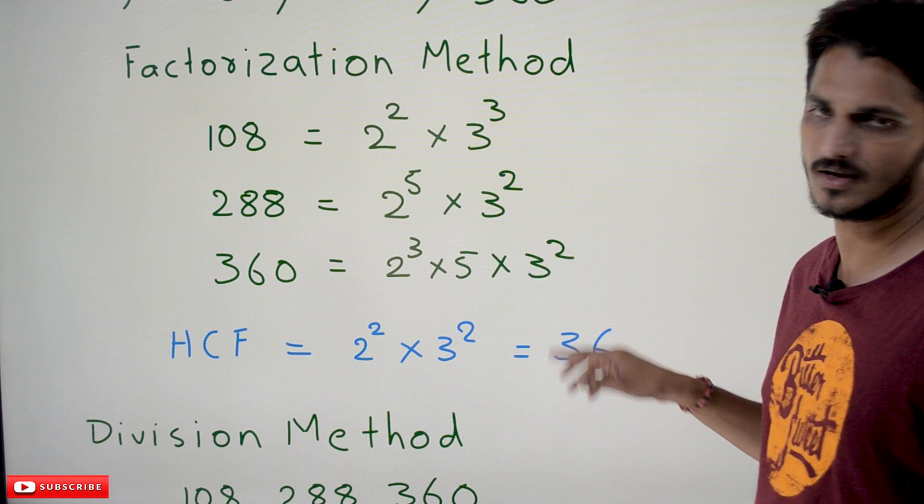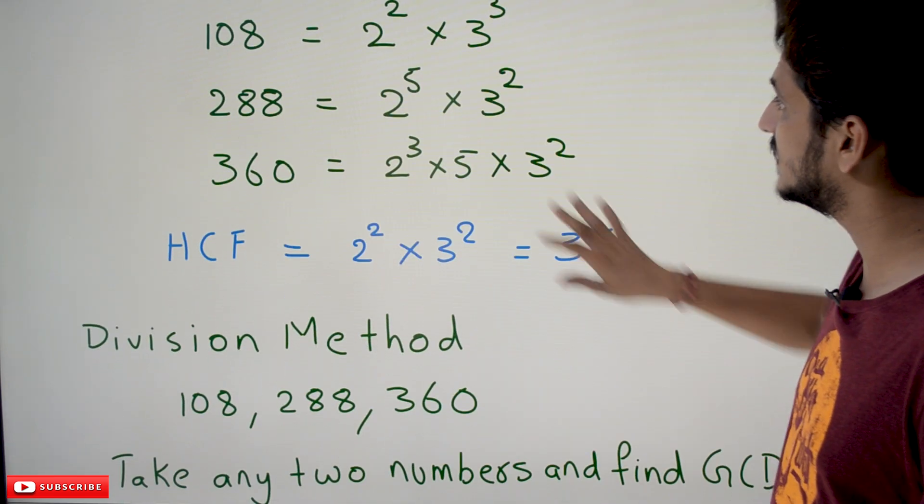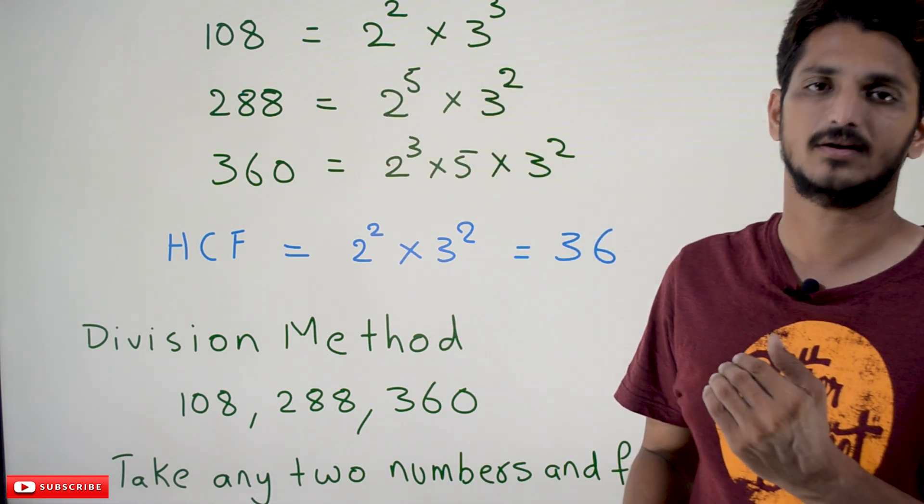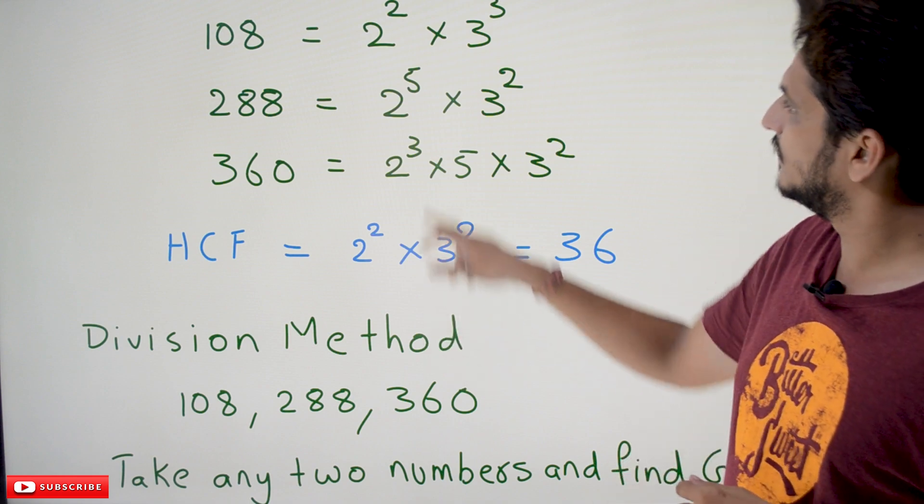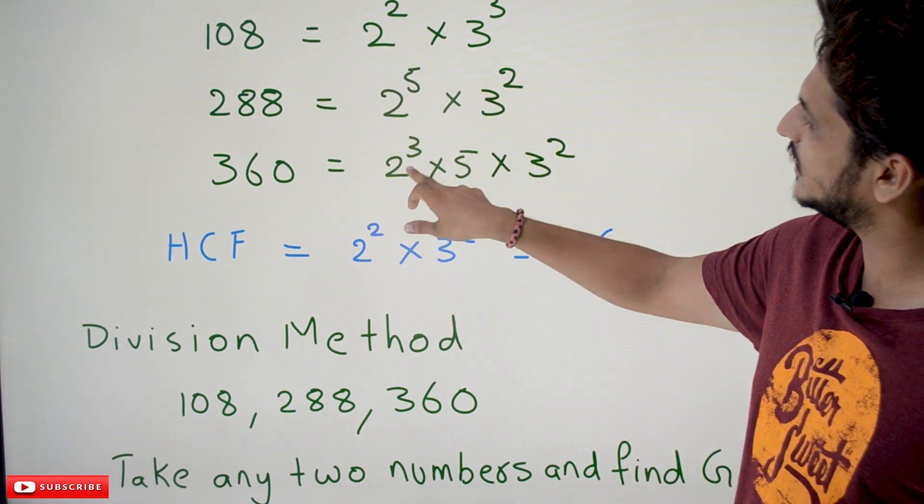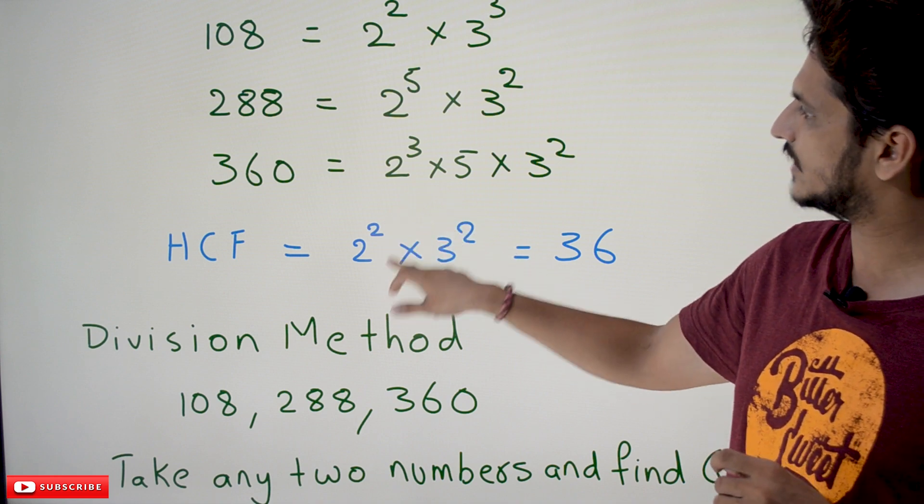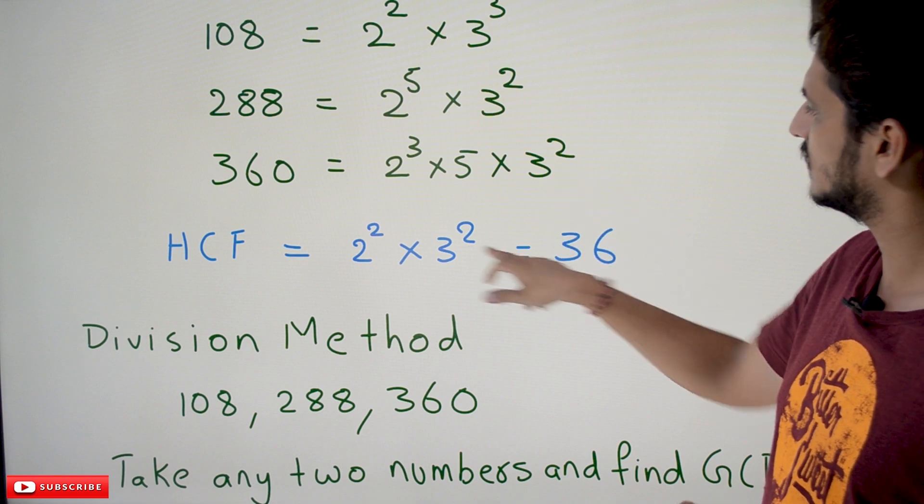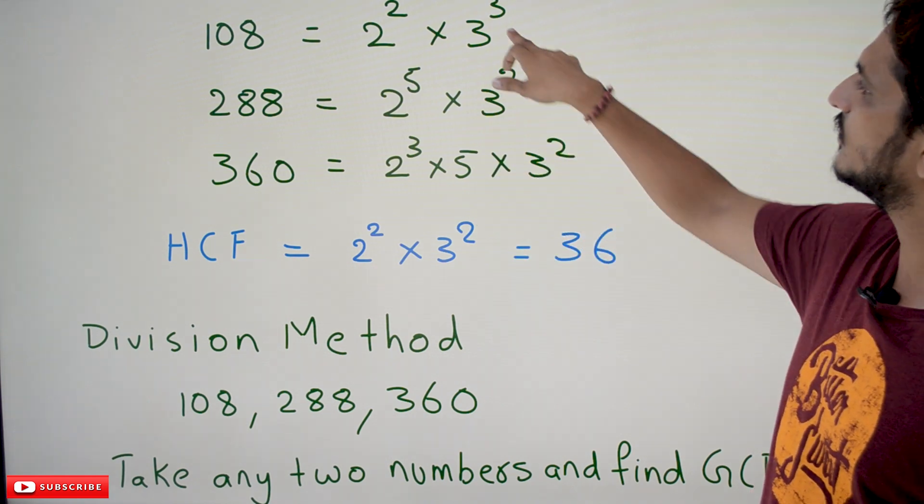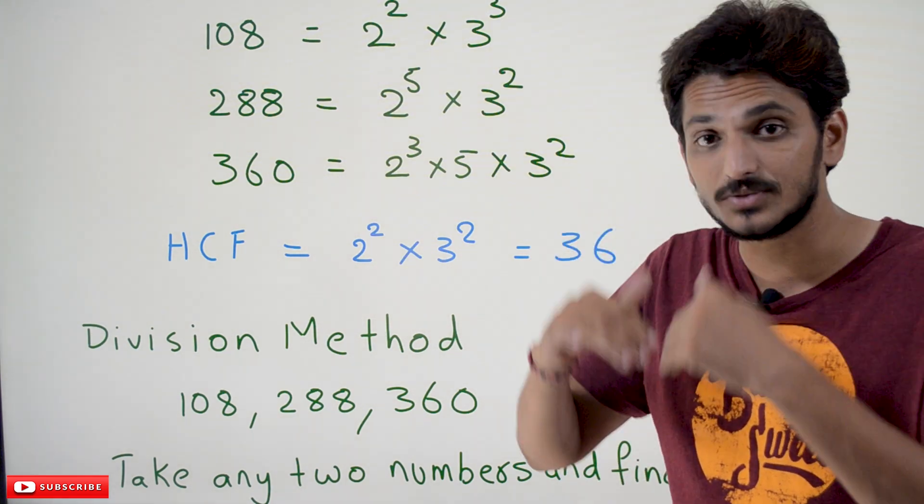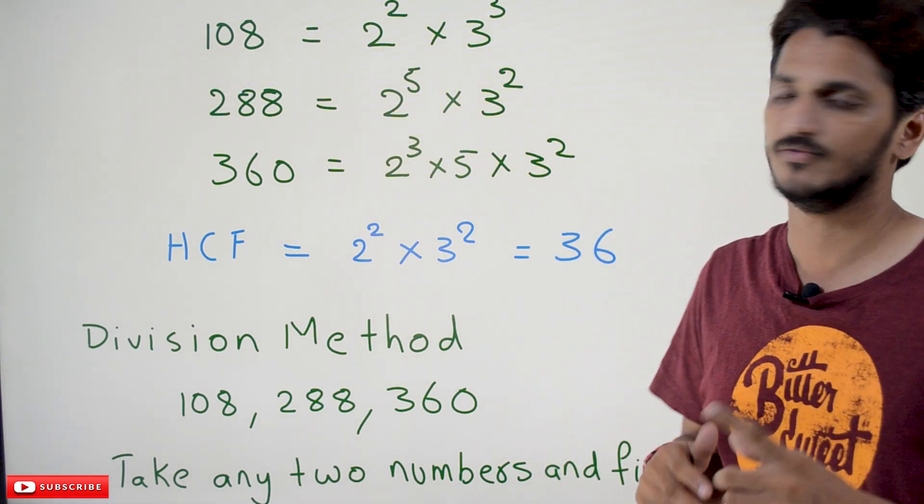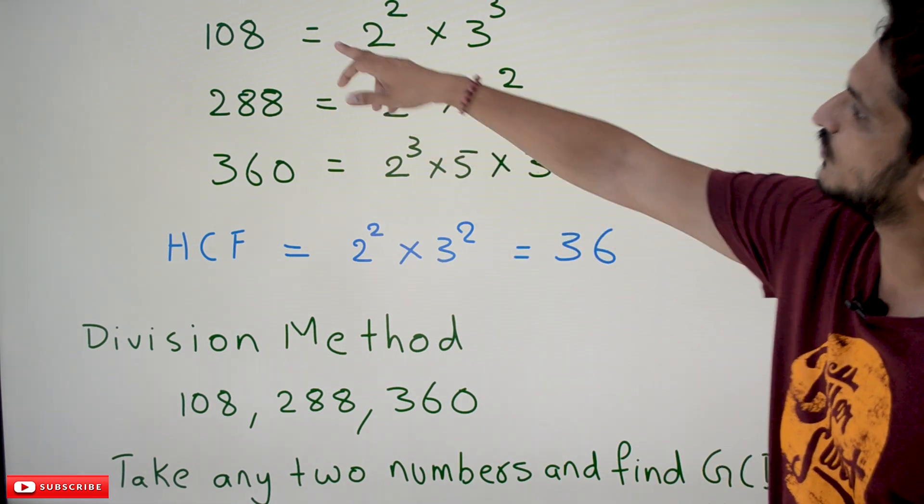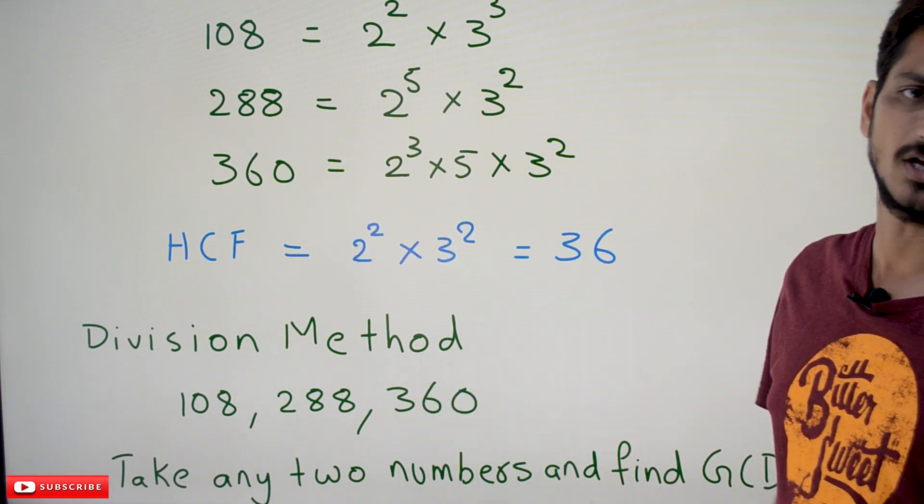If you want to identify the HCF of these three numbers, we have to take the common prime factors with least power. 2 squared, 2 to the power 5, 2 cubed - which one has the least power? 2 squared. 3 squared, 3 cubed, and 3 squared - which one is the least? 3 squared. There's no 5 in all numbers, so we take the common least powers in HCF. So 2 squared multiplied by 3 squared equals 36. 36 is the GCD of the numbers 108, 288, and 360.